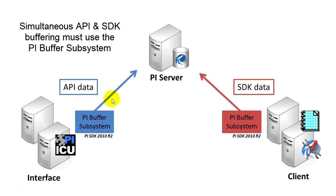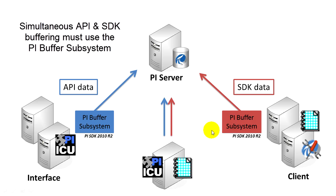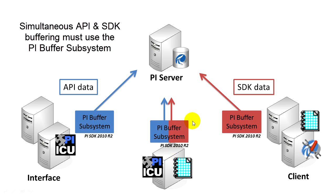Usually the PI Buffer subsystem will be buffering API-only data or SDK-only data, and there are some scenarios where both will be sent from the same node. We recommend this configuration where you're using the PI Buffer subsystem to send both the API and the SDK data simultaneously.